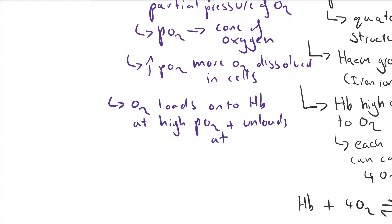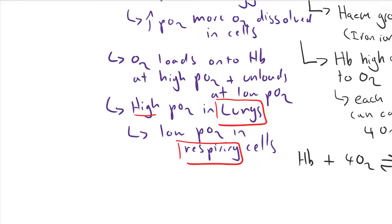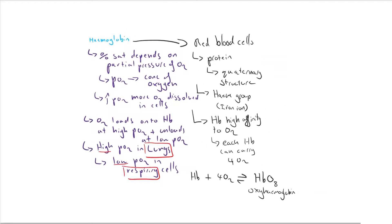When there's a high partial pressure of oxygen in the cell, oxygen loads onto the hemoglobin. And when there's a low partial pressure in the cell, it unloads. So high partial pressure in the lungs, where there's oxygen being brought into the blood, and a low partial pressure in respiring cells, where the oxygen is being used up. So it means you have the oxygen bound to the hemoglobin in the lungs and then released where it's needed, where there's a lack of oxygen.